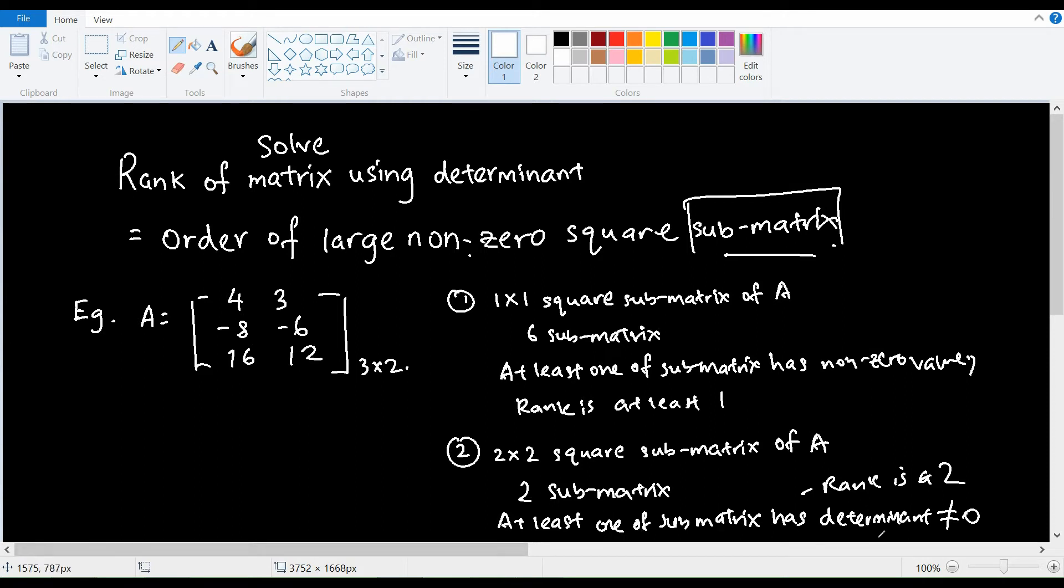determinant not equal to 0. So if the submatrix has determinant not equal to 0, at least one of them, the rank is at least 2. So we have 2 submatrices,